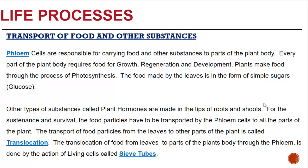Other types of substances called plant hormones are made in the root tips or shoots. For the sustenance and survival of the plant, food particles have to be transported by the phloem cells to all parts of the plant. This transport of food particles from the leaves to other parts of the plant is called translocation.